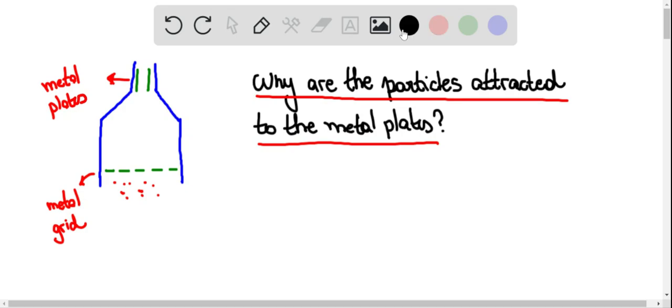According to the text, the smoke particles, when they pass through the grid, are ionized and acquire a negative charge. So particles acquire a negative charge.